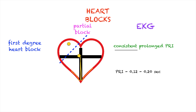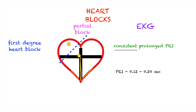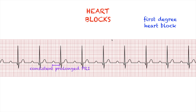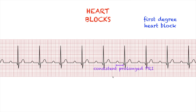Our normal PR interval is between 0.12 to 0.20 seconds. So first degree heart block will look something like this. Sometimes just by looking at your PRI you can tell it is prolonged, but the best way to know is when you measure it. For this EKG strip, there are 9 small boxes times 0.04 seconds. Your PRI for this EKG strip is 0.36 seconds — that is pretty long. Our normal is only up to 0.20 seconds. If you measure your other PRIs, they are consistently long — the same measurements. That is your first degree heart block: consistently prolonged PRI.